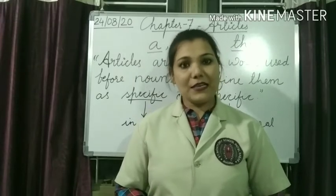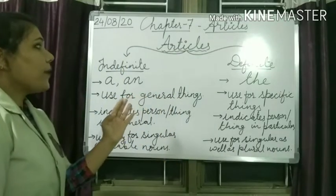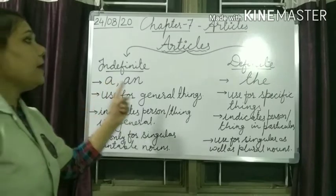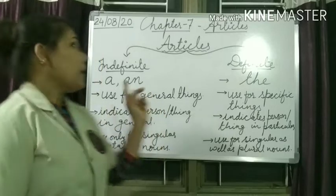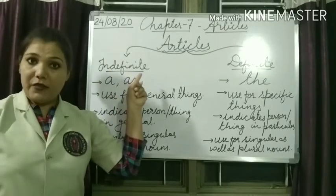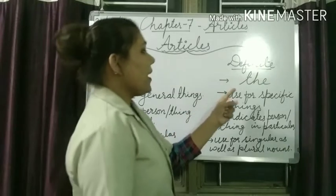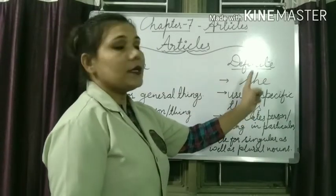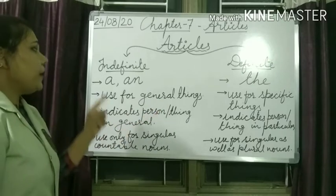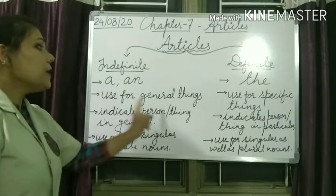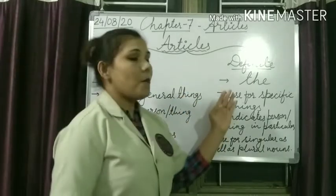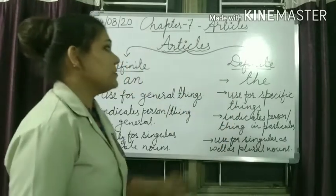Now let's see how many types of articles we have. Articles are categorized into two categories: indefinite and definite. A and An fall under the category of indefinite articles. On the other hand, The falls under the category of definite article. We use indefinite articles A and An for general things.